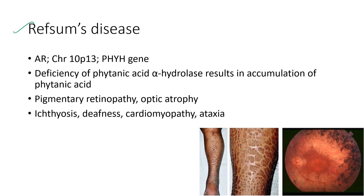Next is Refsum disease. It is an autosomal recessive condition. Deficiency of phytanic acid alpha-hydroxylase results in accumulation of phytanic acid. The ocular features include pigmentary retinopathy and optic atrophy, as shown in this fundus image. The systemic features include ichthyosis, deafness, cardiomyopathy, and ataxia.